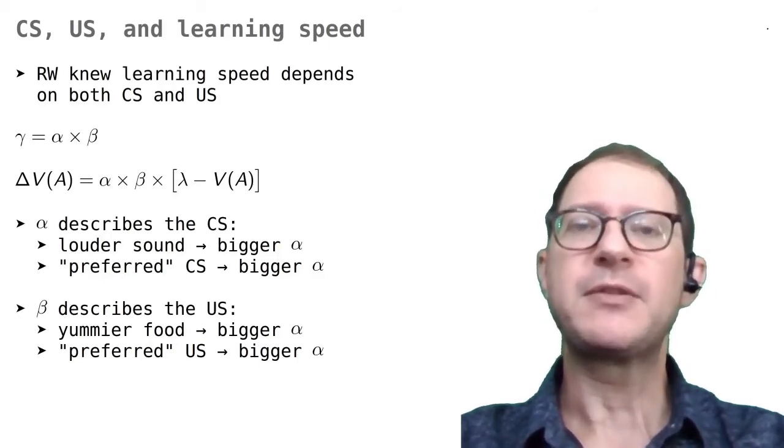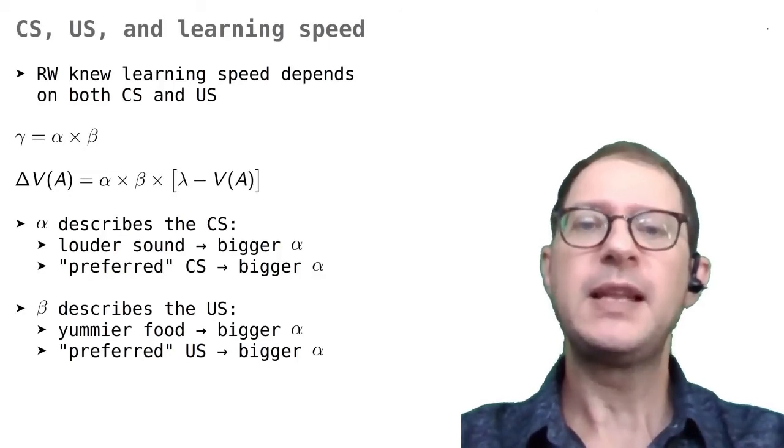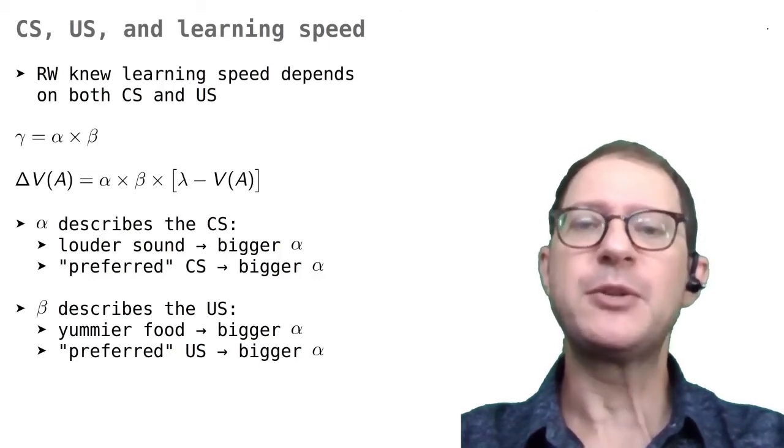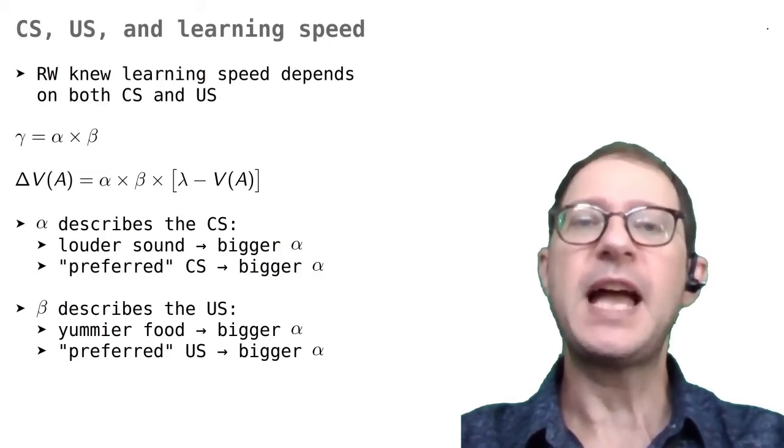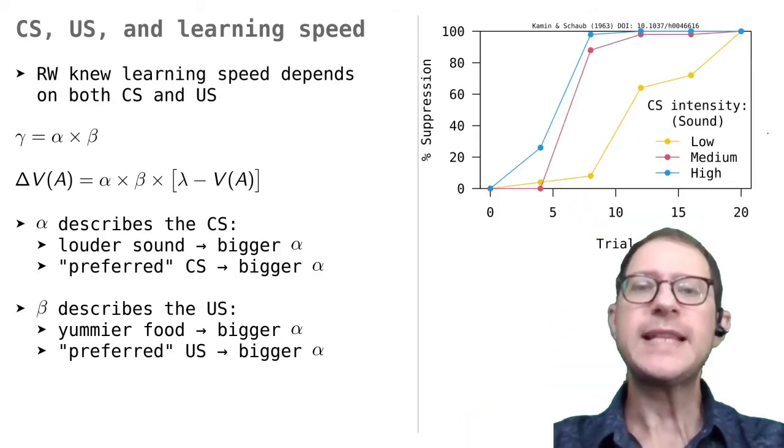So, one number, alpha, describes the CS, and the other, beta, describes the US. Let's start from the CS. A typical finding is that animals learn more quickly if the CS has higher intensity, like a brighter light or a louder sound. For example, this graph shows the results of a study by Kamin and Schaub in which rats learn to be afraid of a sound that was followed by shock.